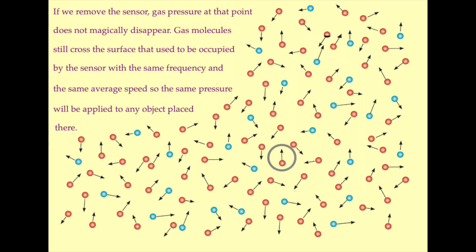If we remove the gas pressure sensor from the system, gas pressure at the point formerly occupied by the sensor does not magically disappear. It does not drop to zero. Gas molecules continue to impact the surface formerly occupied by the detection sensor with the same mean velocity and the same frequency of collision. Any object occupying this point will be subjected to the same pressure as the sensor.